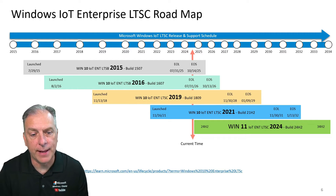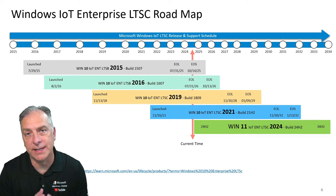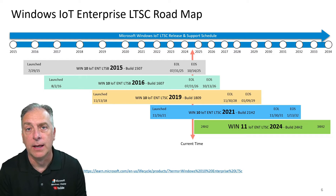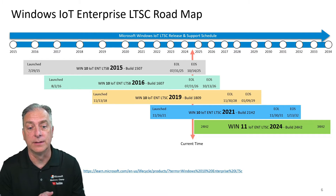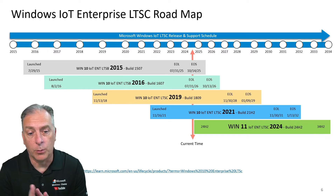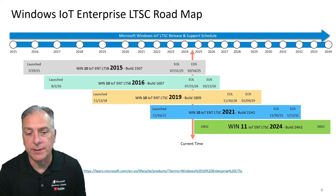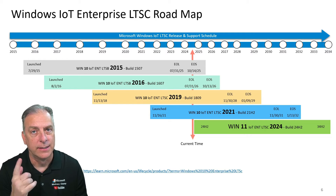Let's look at the roadmap for the IoT Enterprise family of products. All LTSC editions are still available from 2015, 2016, 2019, and 2021 in the Windows 10 family. The LTSC 2021 will be the last version of Windows 10 you can buy, and you can continue purchasing it all the way until January 2032. The brand new Windows 11 IoT Enterprise LTSC 2024, based on build 24H2, is now available and takes you out well into the 2034 time period.